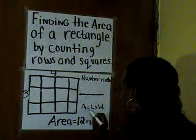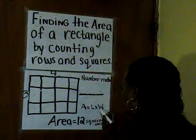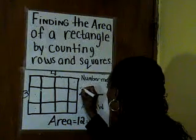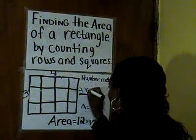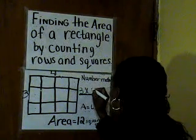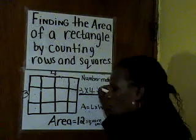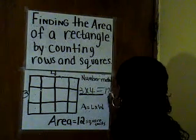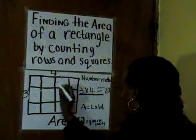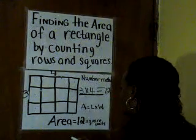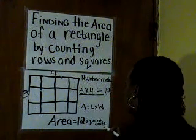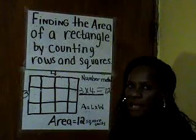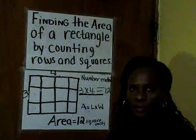Or given the formula, area equals length times width, which would be 3 times 4 equals 12. The area of this rectangle is 12 square units, or area equals length times width.